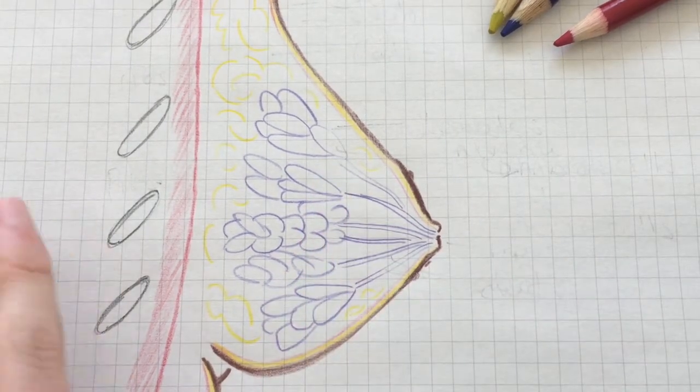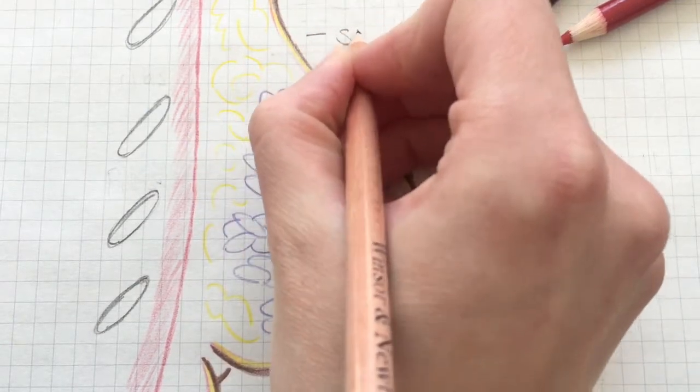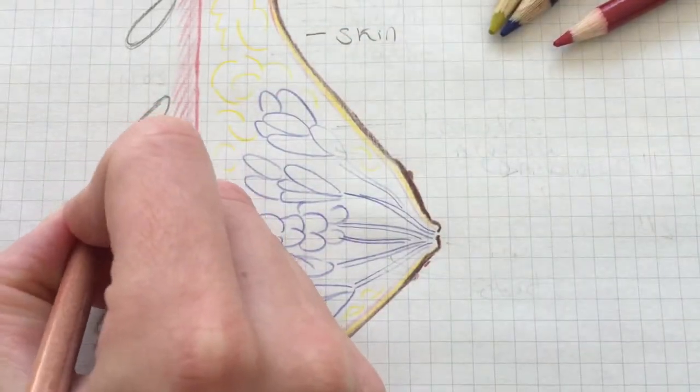Hi, so today we're going to be looking at the anatomy of the breast. I've started off with our basic breast shape. So on this side we've got the skin and the subcutaneous fat, and on this side we've got the ribs and the chest wall.